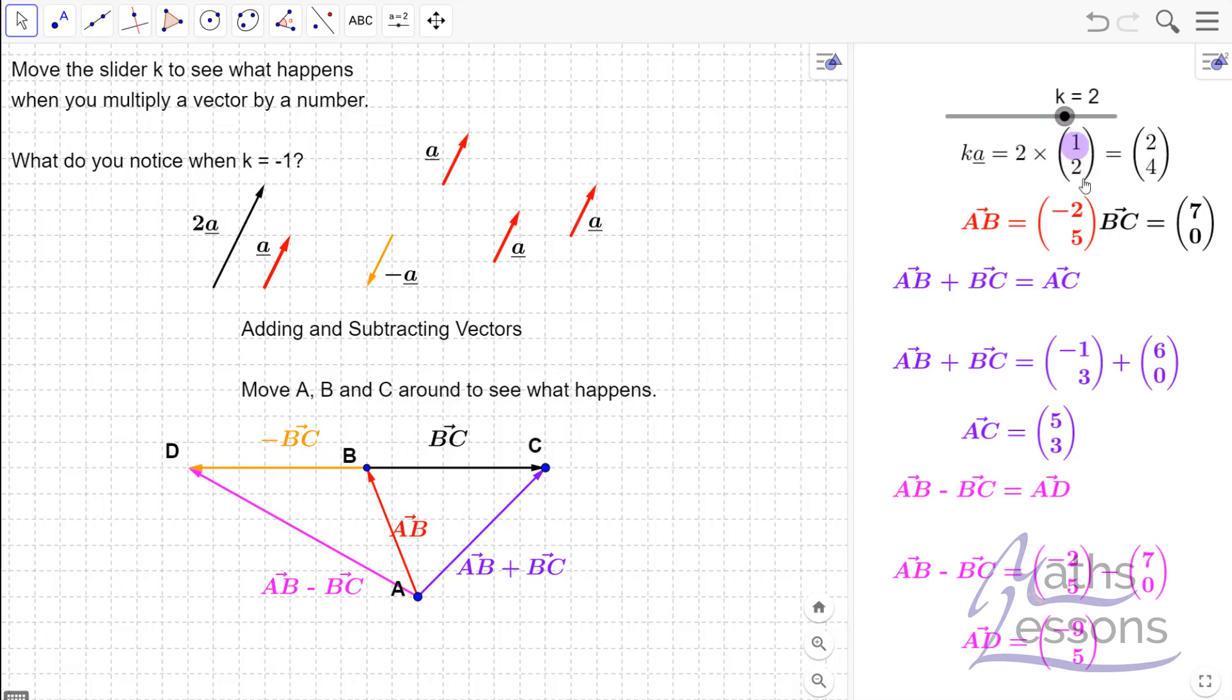Now if I increase that to, let's just choose 2, we see 2 times (1, 2) becomes (2, 4) and you can see the vector is twice the length of A. One thing to note is the vectors are parallel, and vectors are parallel if one is a multiple of the other.